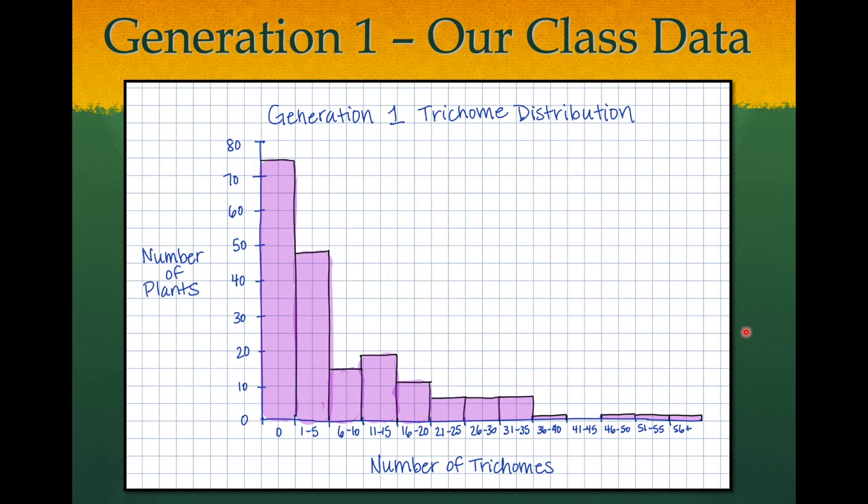So here's the histogram for our actual generation one data, and you can see that most of the plants, in terms of number of trichomes on the x-axis and number of plants on the y-axis, this graph skews heavily towards the left. The majority of plants had zero to about five trichomes. When we did artificial selection with this first generation, we took the top 10 percent, so 18 trichomes or more, basically the right half of this graph, collected them together and cross-pollinated those really hairy plants together.